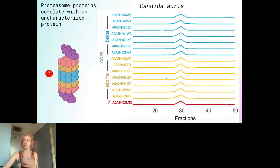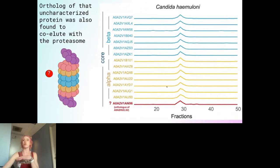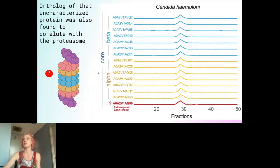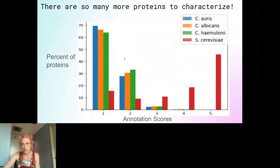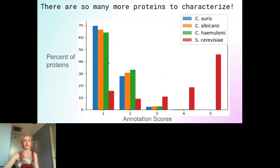We also looked at Candida haemulonii, and the ortholog of that uncharacterized protein also co-elutes with the proteasome core. We've sent this off to our collaborators to do knockouts and verifying experiments. This is just one protein out of all of these that we would like to characterize, which is why we're using this high-throughput method to elucidate the functions of these proteins, or at least who they interact with.